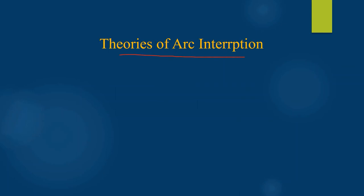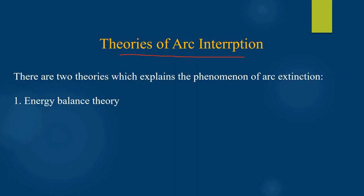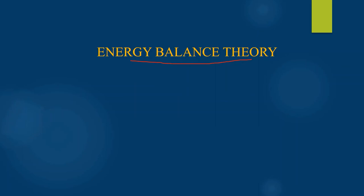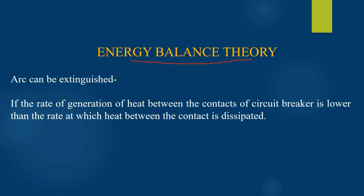Theories of arc interruption. There are two basic theories by which we can explain how the arc can be extinguished: the energy balance theory and the voltage raise theory. According to the energy balance theory, the arc can be extinguished if the rate of generation of heat between the contacts of the circuit breaker is lower than the rate at which the heat between the contacts is dissipated. We can increase the dissipation heat rate by lengthening the arc, cooling the arc, and splitting the arc into several pieces.